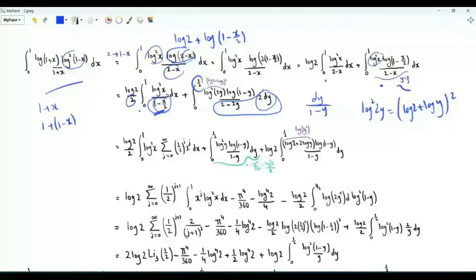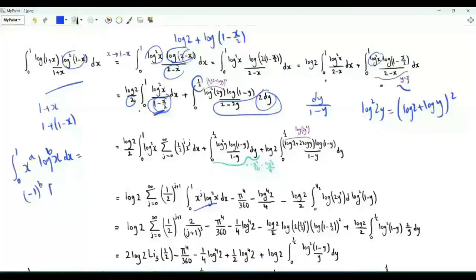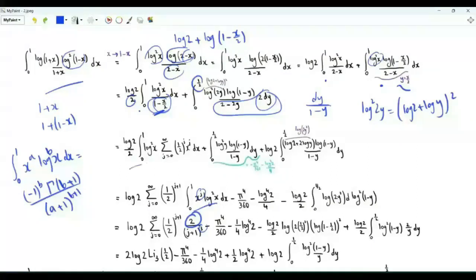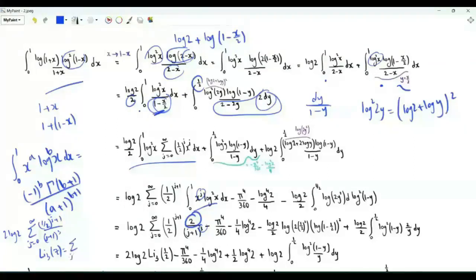Integrating term by term, we have the integral from 0 to 1 of x^j log²x. Using the formula: for a,b with real parts greater than -1, the integral from 0 to 1 of x^a log^b(x) dx equals (-1)^b Γ(b+1)/(a+1)^(b+1). Here this gives (-1)² × Γ(3) / (j+1)³ = 2/(j+1)³. This part equals 2 log(2) times the sum of (1/2)^(j+1)/(j+1)³, which is the trilogarithm Li₃(1/2).